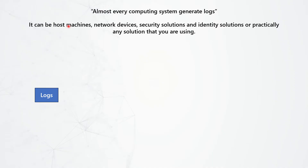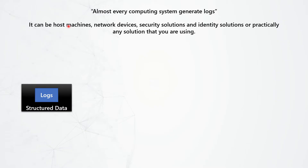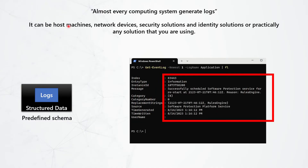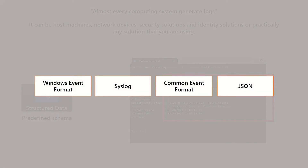These logs generated by computing systems are essentially structured data — they have a predefined schema. For example, an application log has a predefined schema where certain attributes will have specific values, and the value formats are also defined, such as a specific timestamp format. Every log that a computing system generates will be of a specific format. Just to name a few: you have Windows Event Format, Syslog, Common Event Format (CEF), and JSON.